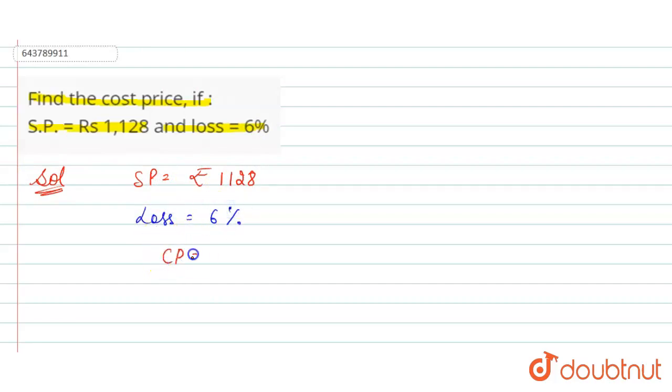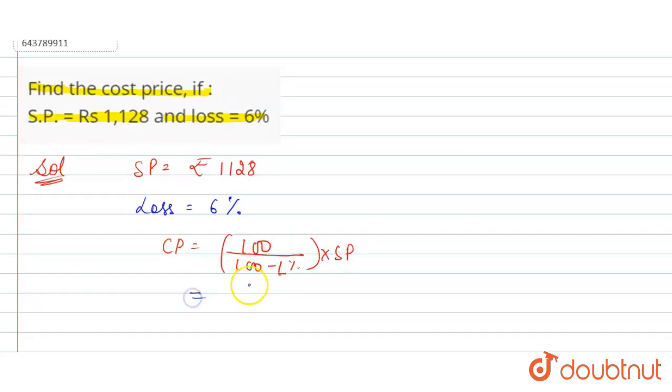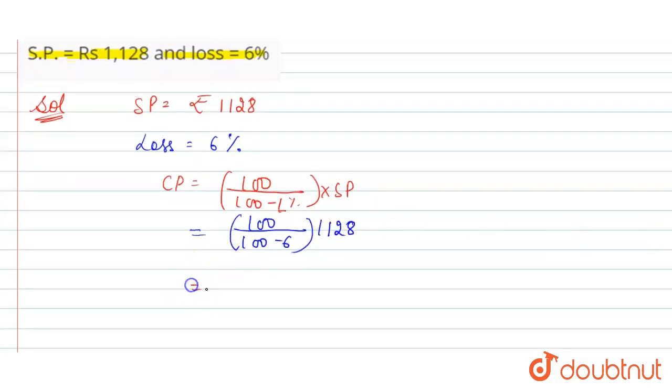So the formula of CP is 100 divided by (100 minus loss percent) into SP. Now put the values: 100 divided by (100 minus 6, loss is 6%) into SP is 1,128.